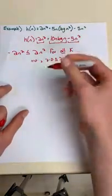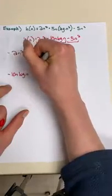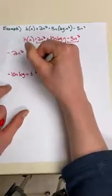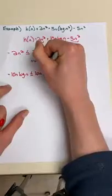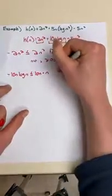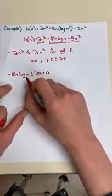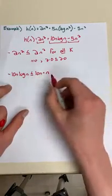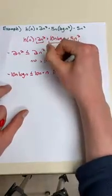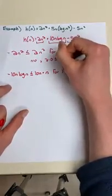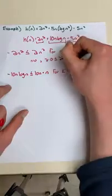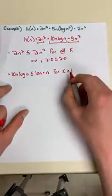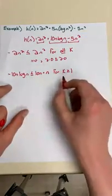Now we want to look at our log value. It holds that 10n times log(n) grows no faster than 10n times n. This is because log(n) is a function that actually grows slower than n. This holds for k is greater than or equal to 1 because a log does not work for a value of 0.